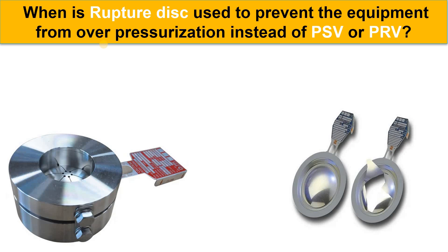In a recent interview, there was a question asked: when is a rupture disk used to prevent the system or equipment from over-pressurization instead of a PSV or PRV? PSV is a pressure safety valve and PRV is a pressure reducing valve. We have already covered many videos about PSV and PRV, so what is the rupture disk?